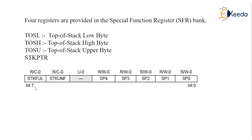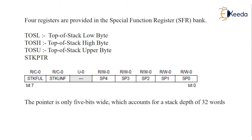The pointer is only 5 bits wide, which accounts for a stack depth of 32 words. Here in the stack pointer register, 5 bits are assigned for stack selection. 2 raised to 5 equals 32 words — meaning 2 bytes or 16 bits each. We know our program memory is 21 bits, which is more than 16, so it is called 32 words. From 0 to 31, since level 0 is not used, we have stack levels 1 to 31.